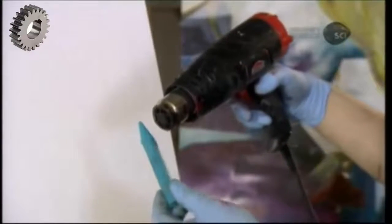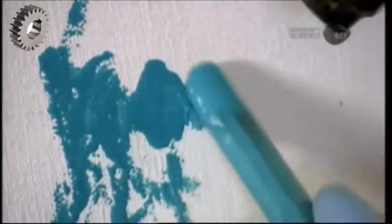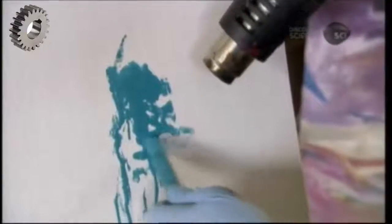Encaustic paint, by contrast, is wax-based, so the artist must melt it while applying it. Because wax cools and hardens so quickly, encaustic paint has a short working time. However, the artist can reheat it and work it some more.